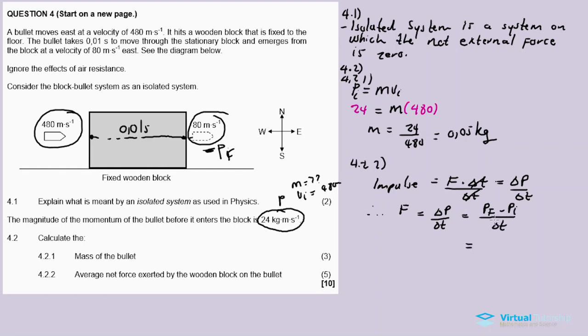P final I can calculate as mass times v final. So it's 0.05 in brackets, times the final velocity of 80, minus P initial which is 24, divided by 0.01.